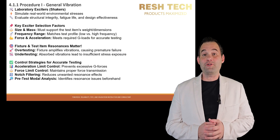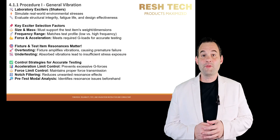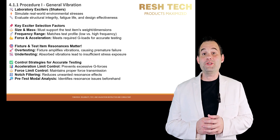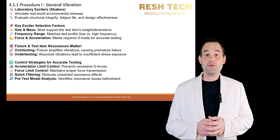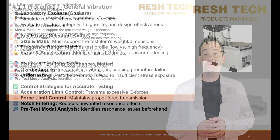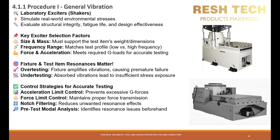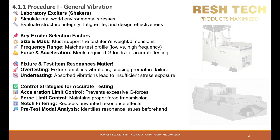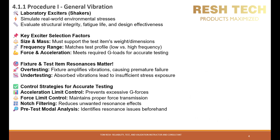Let's jump into Procedure 1 for general vibration testing. Shaker tables are used to simulate environmental stresses. There are three key factors we need to consider when selecting a vibration shaker: size and mass of the test item, frequency range, and force acceleration requirements. One important consideration is modal surveys of both the test fixture and the test item. Fixture resonances can significantly impact test accuracy, leading to over-tests or under-tests. If fixture or item resonance coupling occurs, special control strategies may be required, such as acceleration or force limit control.